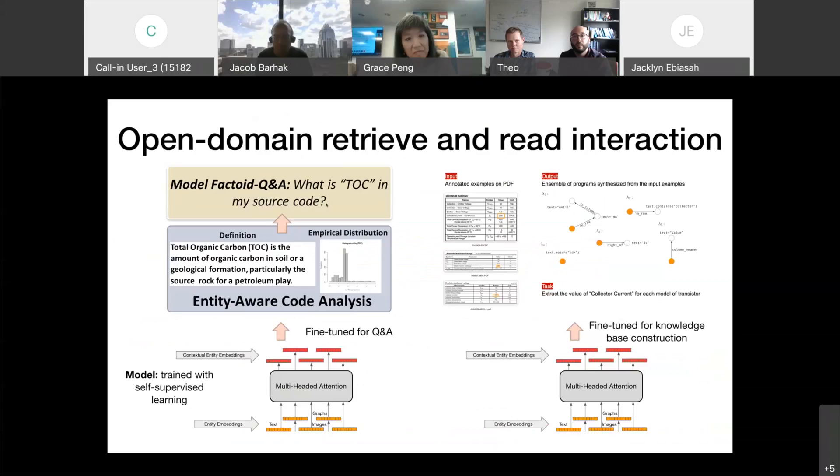Another product, another service of Cosmos is that of open domain retrieve and read interactions that Cosmos supports. For instance, we have the model, the shared contextual model representation that we have for different entities. And by fine-tuning the same model, we can offer different services.